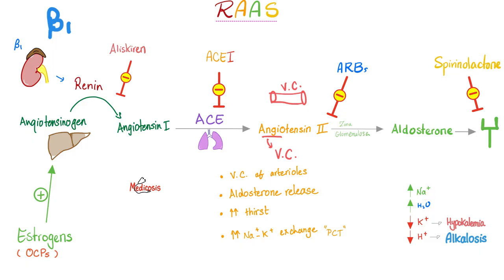Aldosterone has four main functions: reabsorb salt, reabsorb water, secrete potassium, secrete hydrogen. This will increase sodium and water in your blood but decrease potassium and hydrogen. If you just had a car accident, reabsorbing more salt and water raises your blood pressure to perfuse your organs, lest you die from severe hypovolemic shock. Inadequate tissue perfusion is the definition of shock, and patients with hypovolemic shock suffer from hypotension.